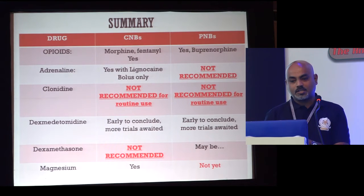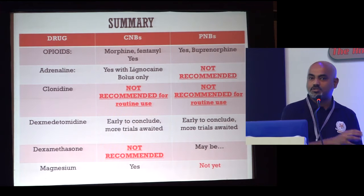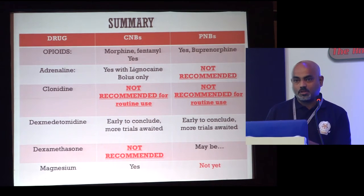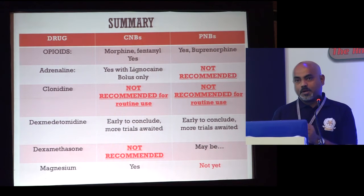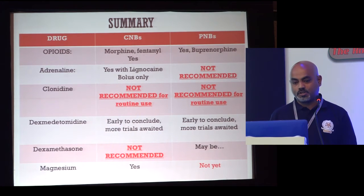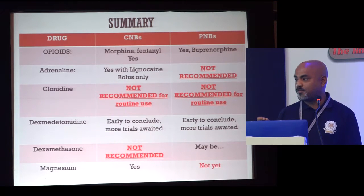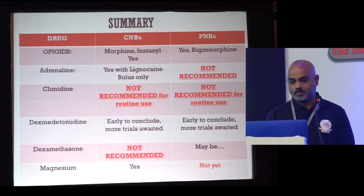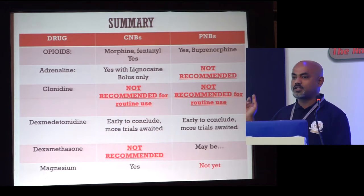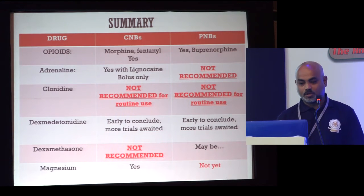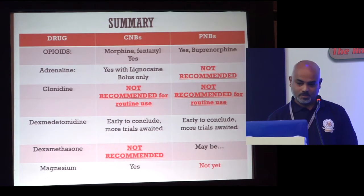I have divided the drugs into two categories: central neuraxial blocks and peripheral nerve blocks. These two categories use different introduced drugs — what works in central neuraxial blocks does not necessarily work in peripheral nerve blocks. Opioids: epidural fentanyl is commonly used and very well validated. In peripheral nerve blocks, only buprenorphine has been validated so far. Adrenaline: yes in central neuraxial blocks, but not recommended in peripheral nerve blocks. Clonidine: not recommended for both. Dexmedetomidine is still a bit early — more trials are awaited. Dexamethasone: definitely not in central neuraxial blocks, mainly in peripheral nerve blocks. Magnesium: yes in central but not yet in peripheral.